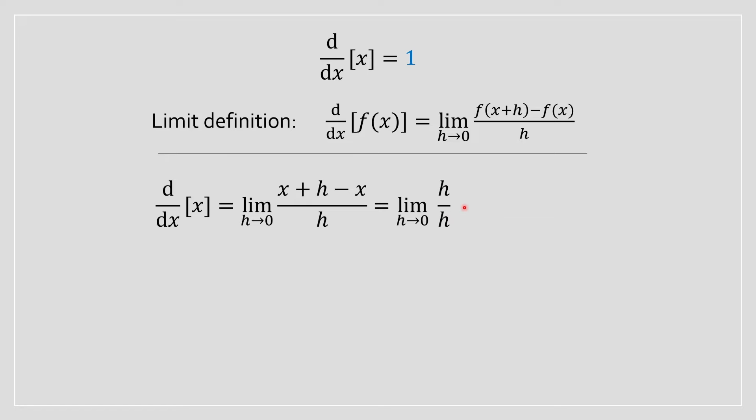That just cancels out, so you're just going to be left with the limit of 1, basically, from h approaching 0. So you're going to be just left with an answer of 1. And there you have it, lads, this is why the derivative of x is equal to 1.